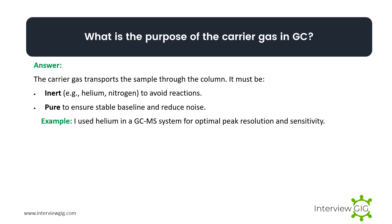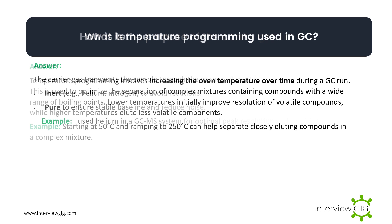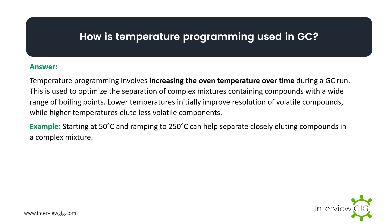What is the purpose of the carrier gas in GC? The carrier gas transports the sample through the column. It must be inert to avoid reactions and pure to ensure a stable baseline and reduce noise. Example: I use helium in a GC-MS system for optimal peak resolution and sensitivity.